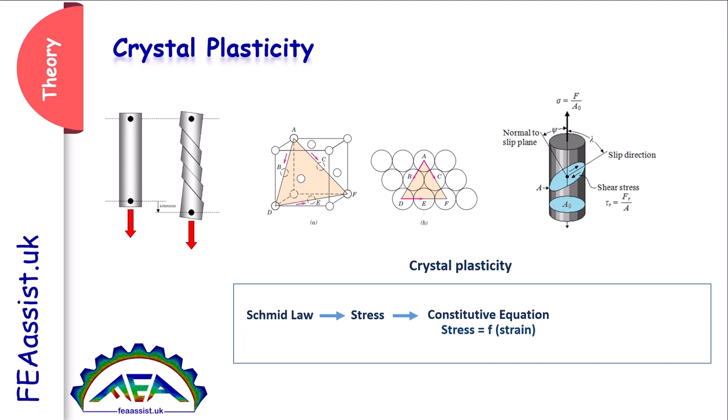Generally, crystal plasticity uses Schmid's law to compute the stress in each slip system. By the constitutive equation — which relates stress to strain, strain rate, temperature, and other variables — we can compute the stress in each slip system. And by the constitutive equation we can also compute the strain in each slip system.